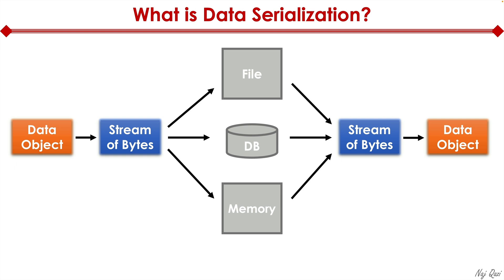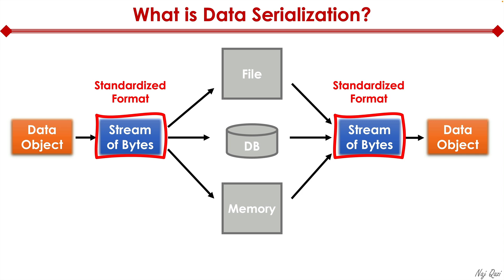How do we allow data to talk to each other across these different systems and understand different file types and data objects? That's where data serialization comes into play. It turns traditional proprietary data formats on their head by storing and exchanging data in a standard format that is platform and language neutral and can be understood universally — making data portable across Windows, Linux, and Mac.